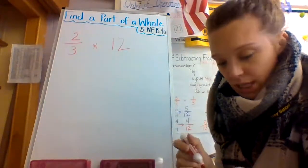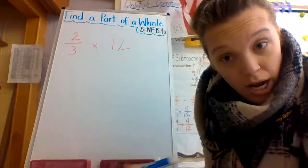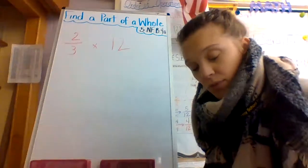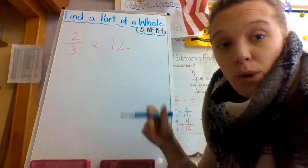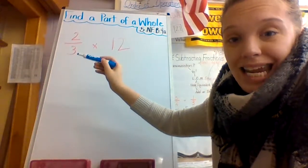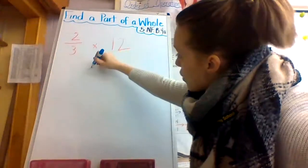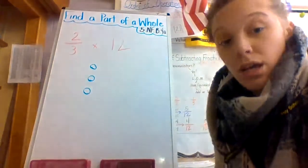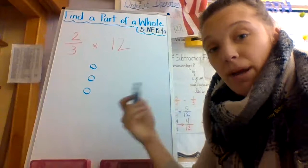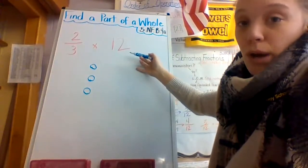So the first step, of course, we're going to draw an array. Choose your strategy. When I do my strategy of drawing an array, I'm going to look at my denominator and I see the number three. So I'm going to draw one, two, three. I'm going to continue to count by my threes until I reach my whole number, which is 12.